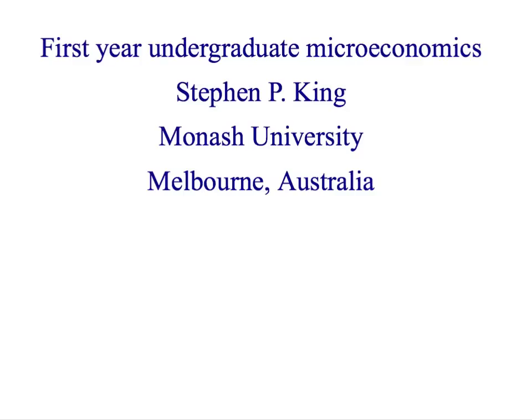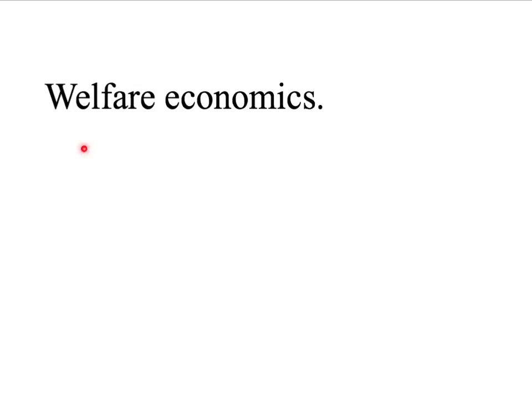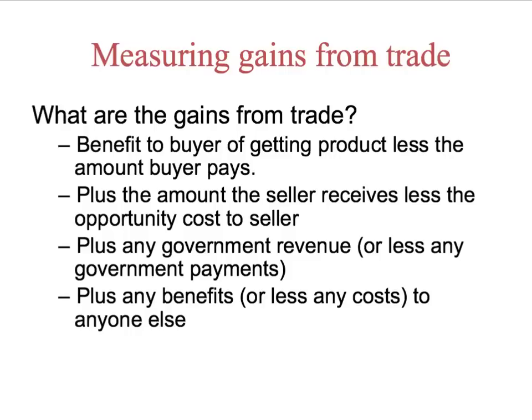Welcome back to First Year Undergraduate Microeconomics. We've been discussing welfare economics and looking at measuring gains from trade. The way we've done that is to isolate the four different groups who can be affected by a market transaction: the buyers, the sellers, the government, and anyone else.